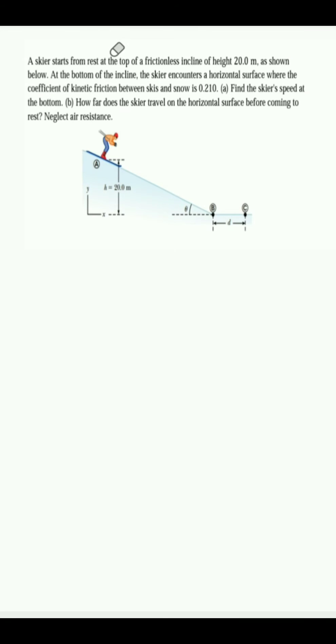A skier starts from rest at the top of a frictionless incline at height of 20.0 meters as shown below. At the bottom of the incline, the skier encounters a horizontal surface where the coefficient of kinetic friction between the ski and snow is 0.210. Part A: Find the skier's speed at the bottom. Part B: How far does the skier travel on the horizontal surface before coming to rest? Neglect air resistance.